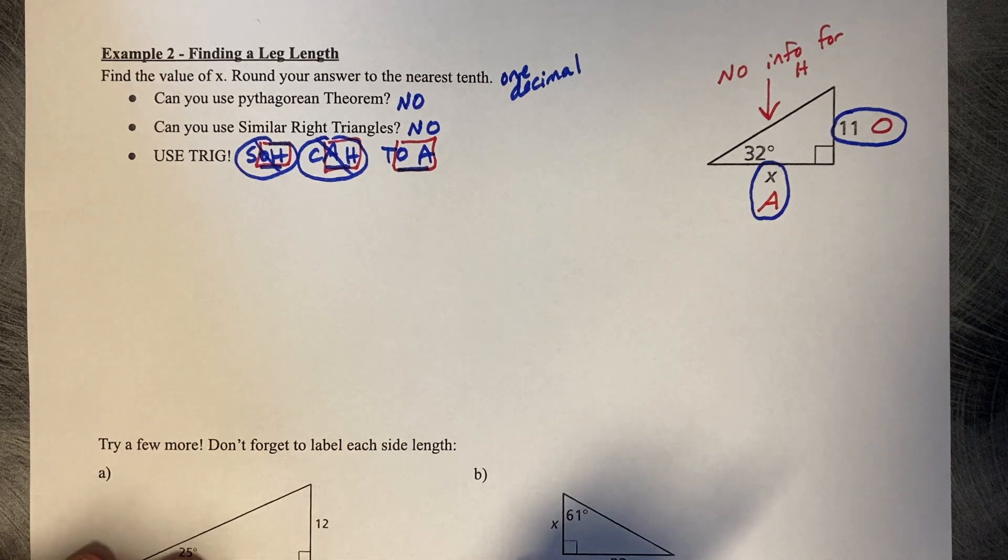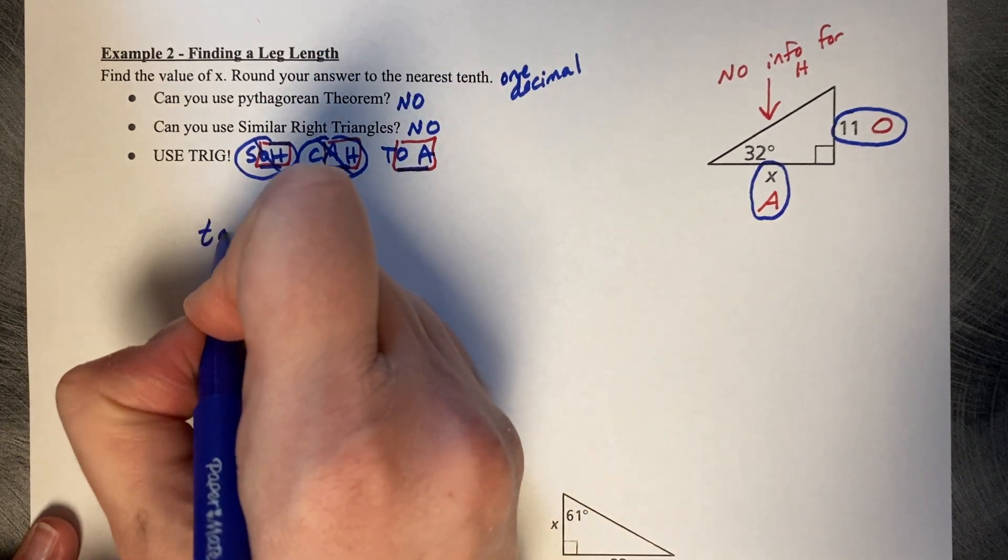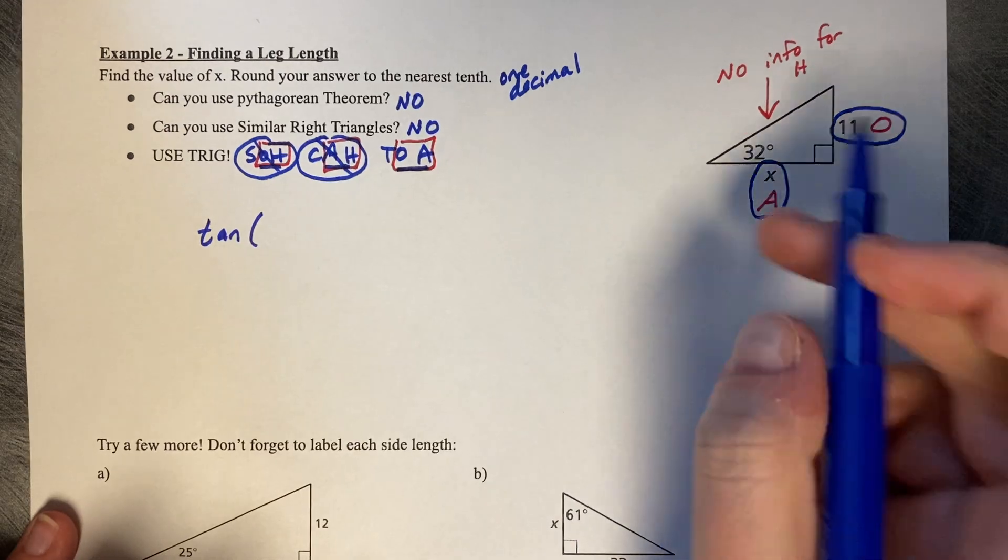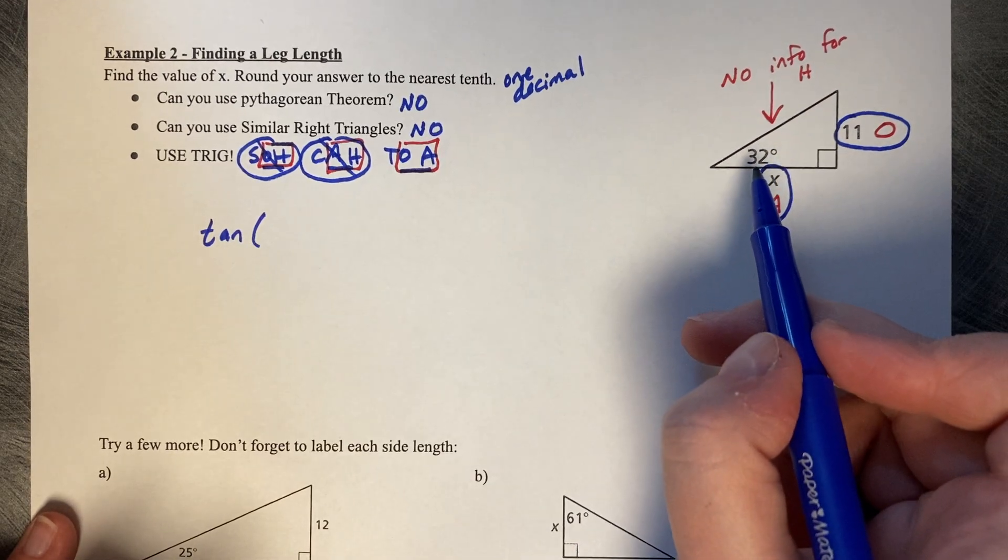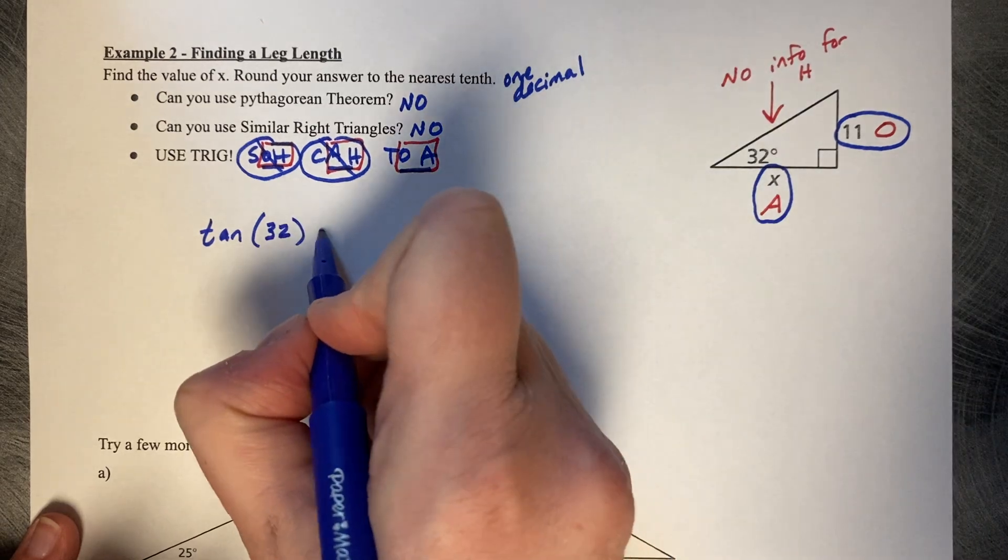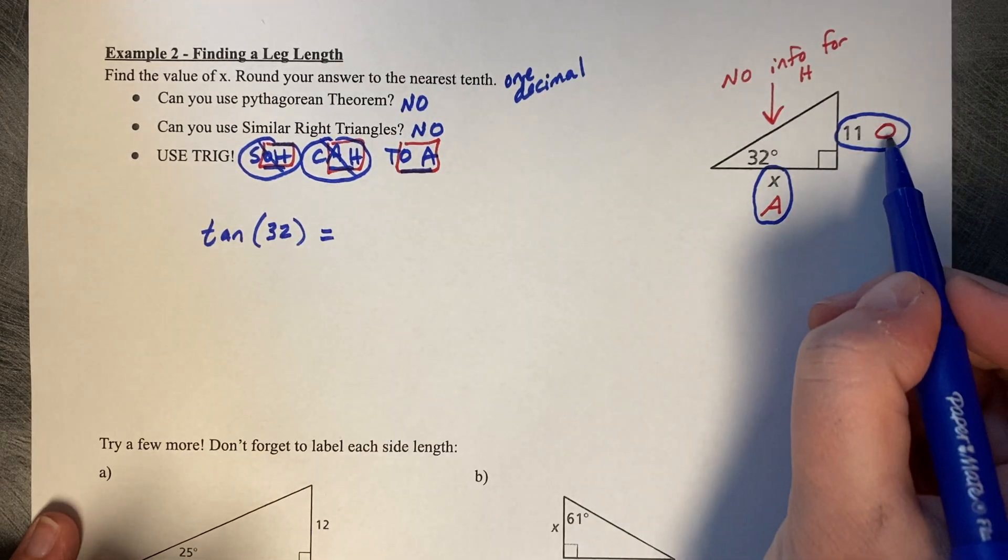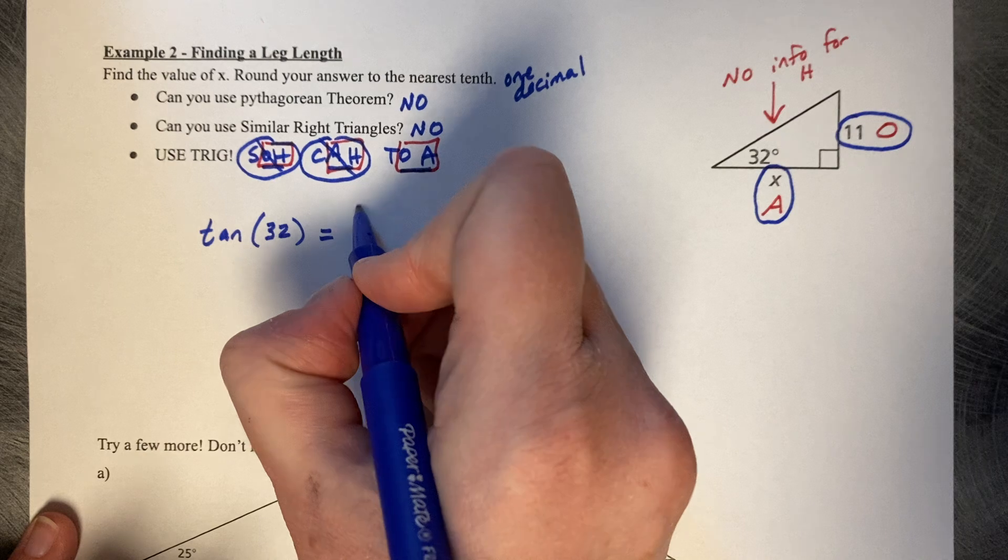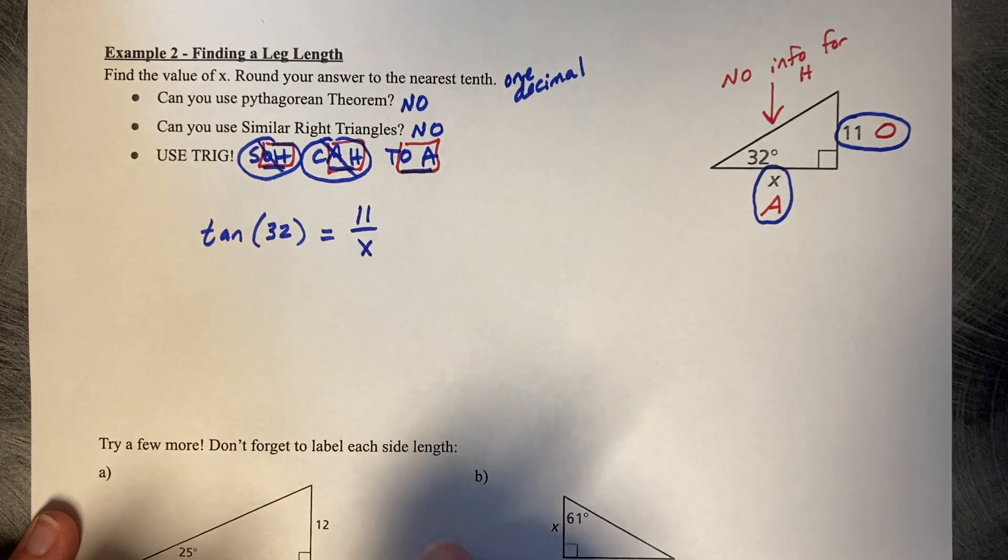Now we're going to set up an equation. The tangent, normally it would be of theta, but in this case we know theta is 32, equals our opposite over adjacent, 11 divided by X.